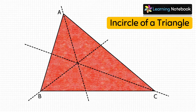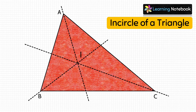Now we have found the incenter of this triangle. Let's mark the point of intersection of these three angle bisectors as I.